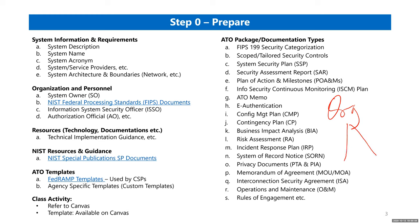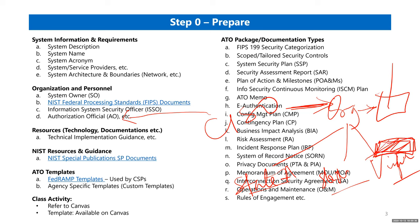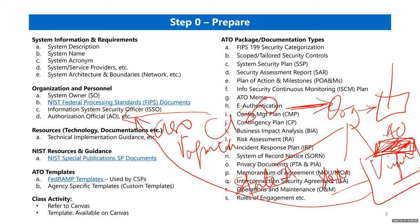For example: if an organization has multiple branches across different states and the system will be used organization-wide, the overall CISO may be the AO. But if the system is only meant for Virginia operations, the AO might be the CISO of only that Virginia branch.